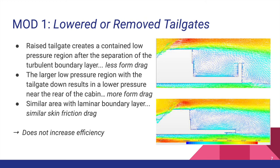We now look at lowering a tailgate. This changes the geometry of streamlines, increasing the size of the low pressure region, causing greater streamline curvature and density. As such, a lower pressure at the base of the cabin forms, increasing form drag. With comparable skin friction drag force, the lower tailgate has higher overall drag force.